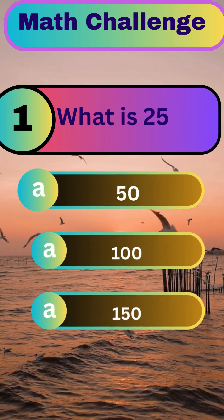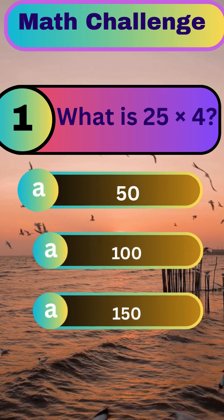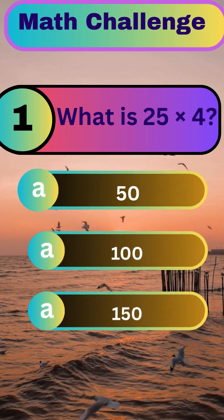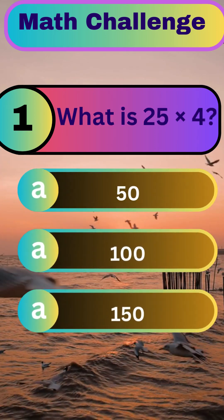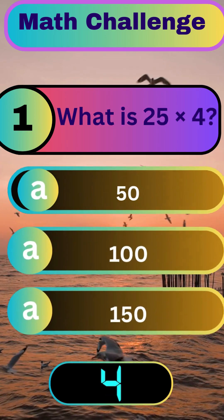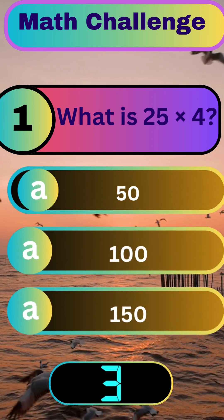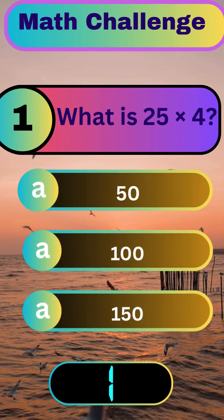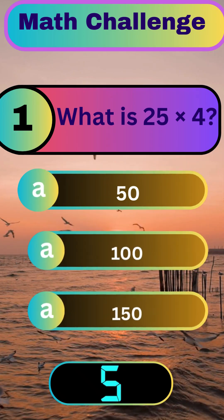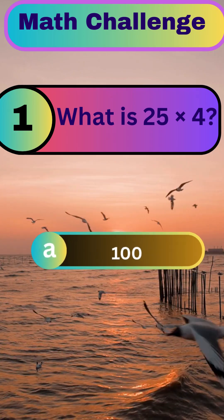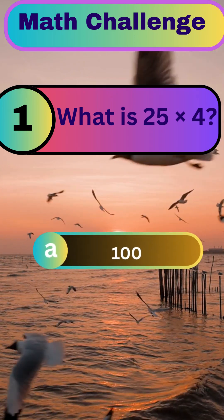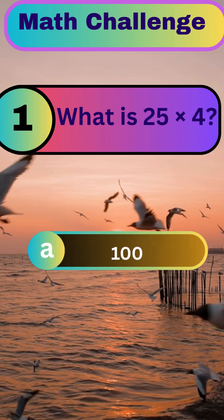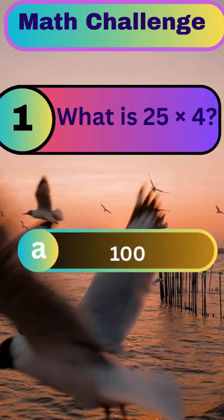Let's start with something quick. What is 25 times 4? And the correct answer is 100.